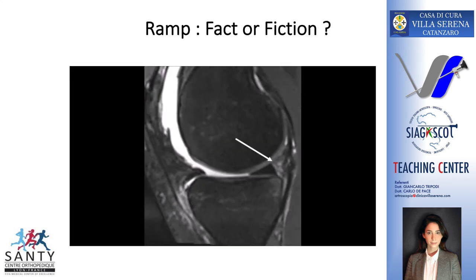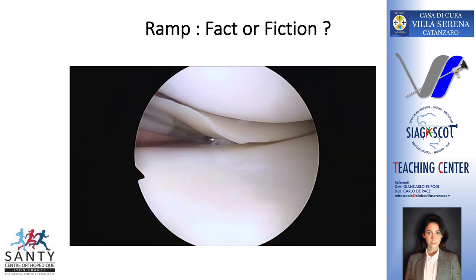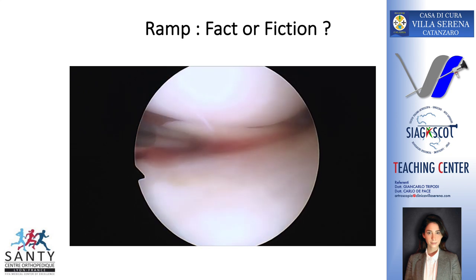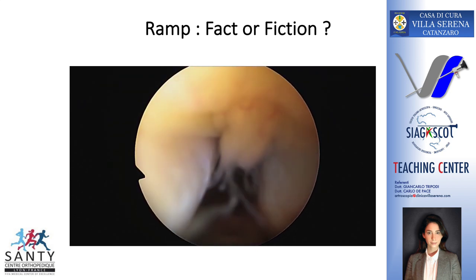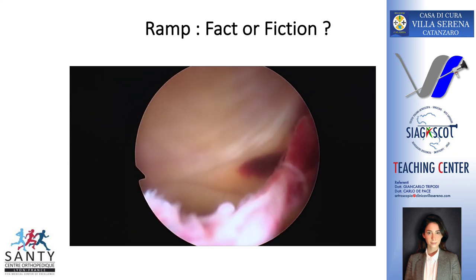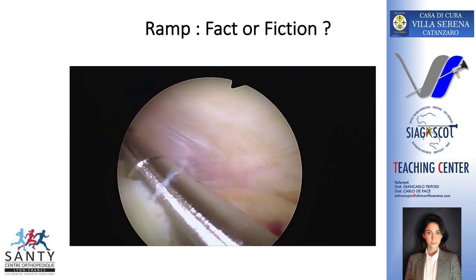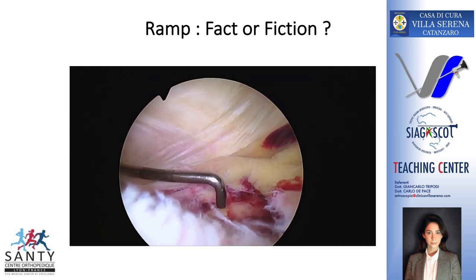There's still a lot of discussion regarding the existence of RAMP lesions. Here, we present a case of a professional soccer player with this MRI aspect. Then, during arthroscopy, we can see a mild instability in the anterior view, which would be left alone by a big part of us. But then, when we push the scope trans-notch, we can see this big hematoma between the capsule and the medial meniscus.